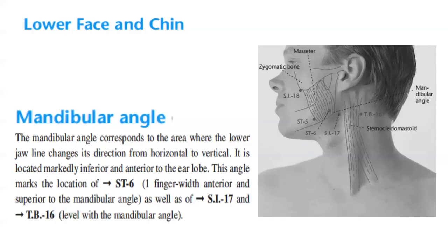On the lower face and chin, first we have the mandibular angle. The mandibular angle corresponds to the area where the lower jawline changes its direction from horizontal to vertical. It is located markedly inferior and anterior to the earlobe. This angle marks the location of Stomach 6, which is one finger width anterior and superior to the mandibular angle, as well as Stomach 17, SI17, and Triple Burner 16, which is at the level of the mandibular angle.